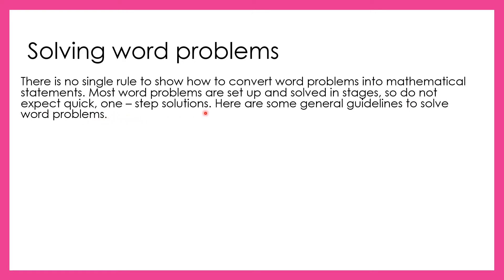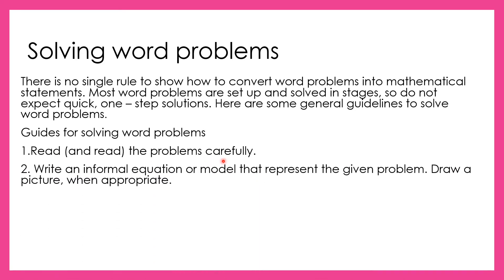There are some general guidelines to solve word problems. Number one: read and read and read the problems carefully. Number two: write an informal equation or model that represents the given problem. Draw a picture when appropriate. Three: label the known and the unknown quantities. That's why we have x and y, so we have to find x for the unknown quantities.